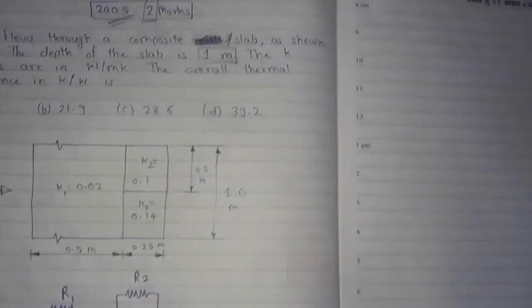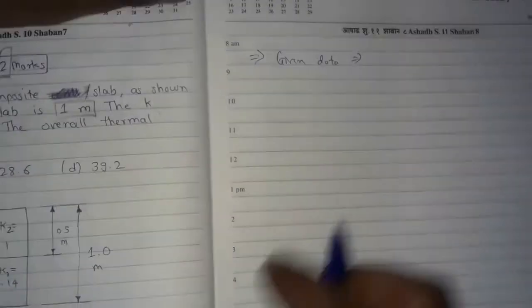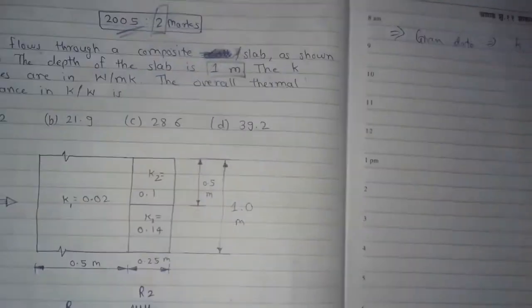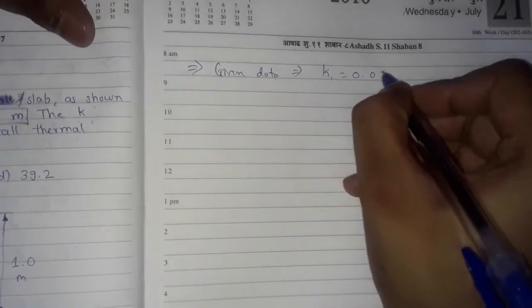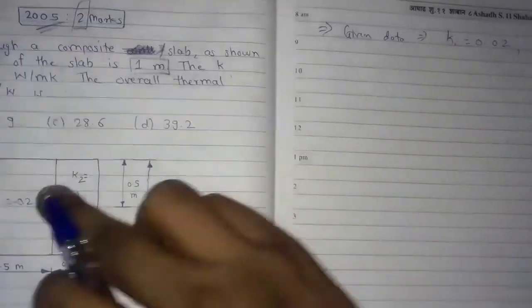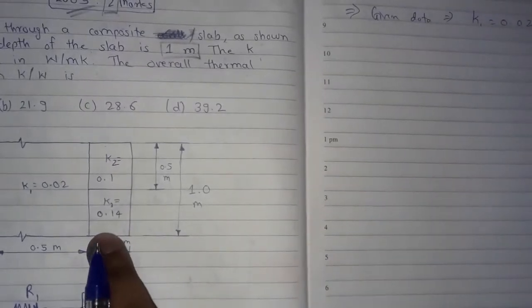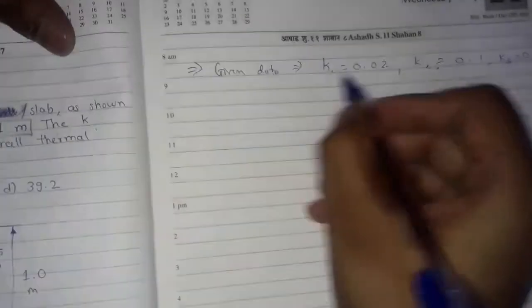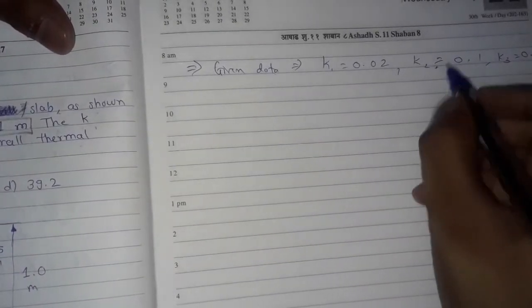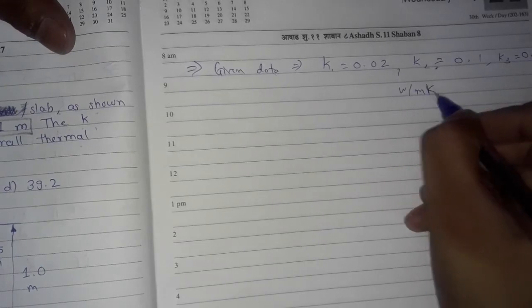Now let's write down the given data. We have k1, k2, and k3 as follows: k1 is equal to 0.02, k2 is equal to 0.1, and k3 is equal to 0.14. All these k values are in watt per meter kelvin.